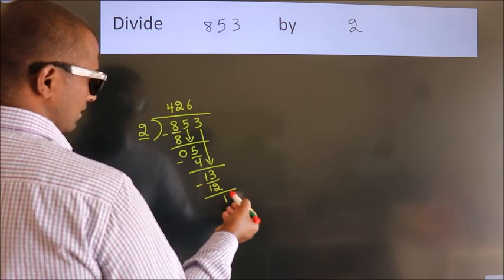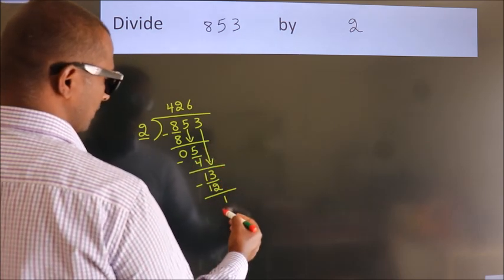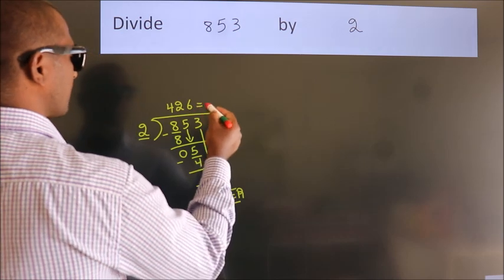After this, no more numbers to bring it down. So we stop here. This is our remainder. This is our quotient.